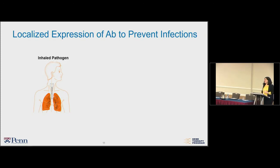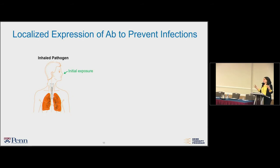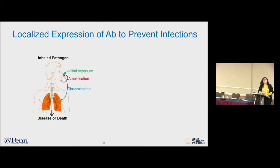The difference from previous strategies, which injected intramuscularly or intravenously, is that we're harnessing our experience in the CF world to localize expression of antibodies in the airway, especially for airway pathogens, focusing on flu first. For an inhaled pathogen, amplification typically occurs in the nasal airways and by aspiration disseminates into the lower airways where it causes disease. What we wanted to do is target this initial exposure and create a biomass — having antibody production in the nasal airways.